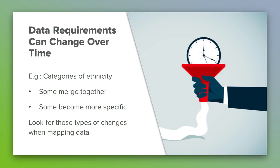Another issue is that requirements for data change over time. At UC Davis, one of the things we've seen over the years is that the way we track race and ethnicity has evolved. If you go back to the data we collected 10 years ago, you would see a different list of ethnicities in our electronic health record than we see today. Some of these categories have merged, and some go to more detail than they did in the past. Knowing that the data has changed over time makes a big difference and must be considered when mapping or otherwise working with data.